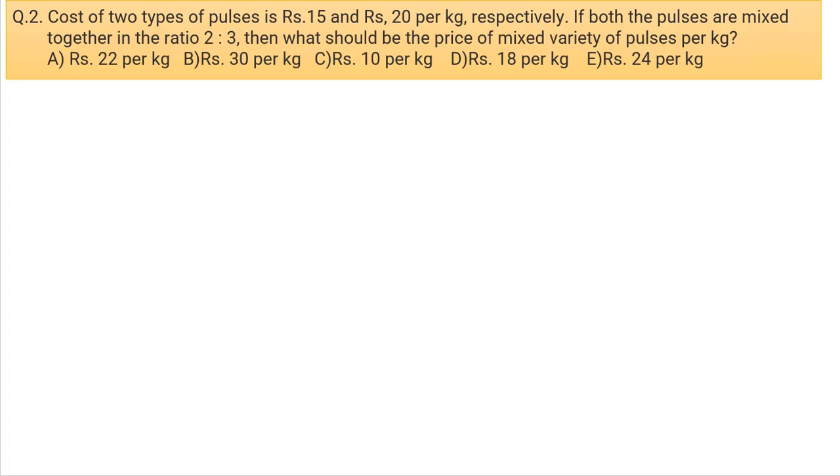Question number 2: Cost of two types of pulses are Rs. 15 and Rs. 20 per kg respectively. If both pulses are mixed together in the ratio of 2 to 3, then what should be the price of the mixed variety of pulses per kg?